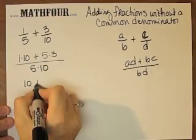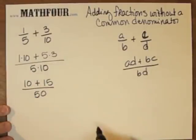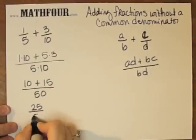This is 10 plus 15 over 50. 10 plus 15 is 25 over 50.